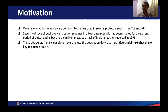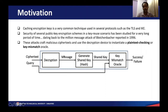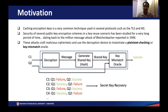Caching of encryption keys has been used as a standard technique for efficiency reasons in several protocols such as TLS and IKE, mainly because it reduces the overhead from generating new keys after every encryption. The security of several public key schemes in such a scenario when static keys are reused has been studied for a very long time, dating back to the attack of Bleichenbacher reported in 1996 on RSA. These attacks typically work by querying the decryption device using malicious ciphertexts, and the attacker makes several guesses for the decrypted message and computes the corresponding shared keys, checking whether the shared keys match or not over several ciphertext queries. By obtaining such information over several invalid ciphertexts, the attacker is able to recover the secret key.